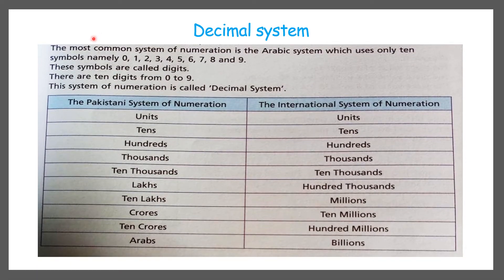Decimal system. The most common system of numeration is the Arabic system which uses only 10 symbols, namely 0, 1, 2, 3, 4, 5, 6, 7, 8, and 9. These symbols are called digits. There are 10 digits from 0 to 9, so this system is called the decimal system.